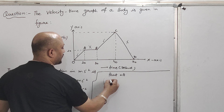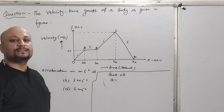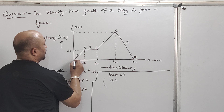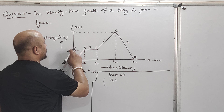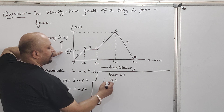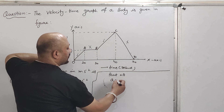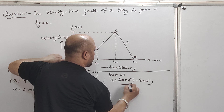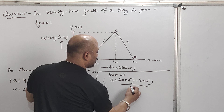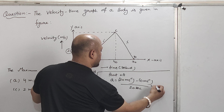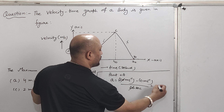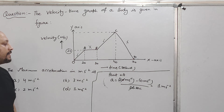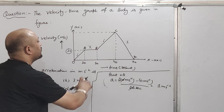As you know very well, acceleration is the change in velocity upon change in time. If we talk about part OA, the initial velocity is 0 meters per second and the final velocity is 20 meters per second. So acceleration equals (20 minus 0) divided by 20 seconds, which equals 1 meter per second square. So OA part has acceleration of 1 meter per second square.